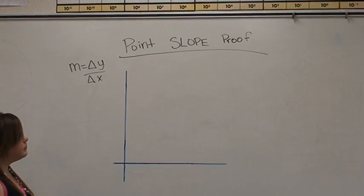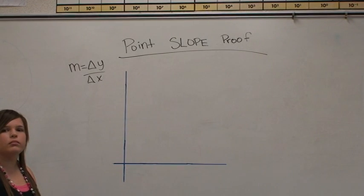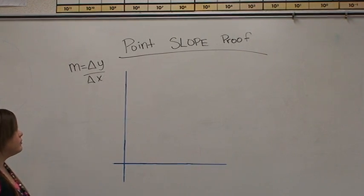This is the point slope proof. To start off the point slope proof, we must define our slope m as equaling the change in y over the change in x.